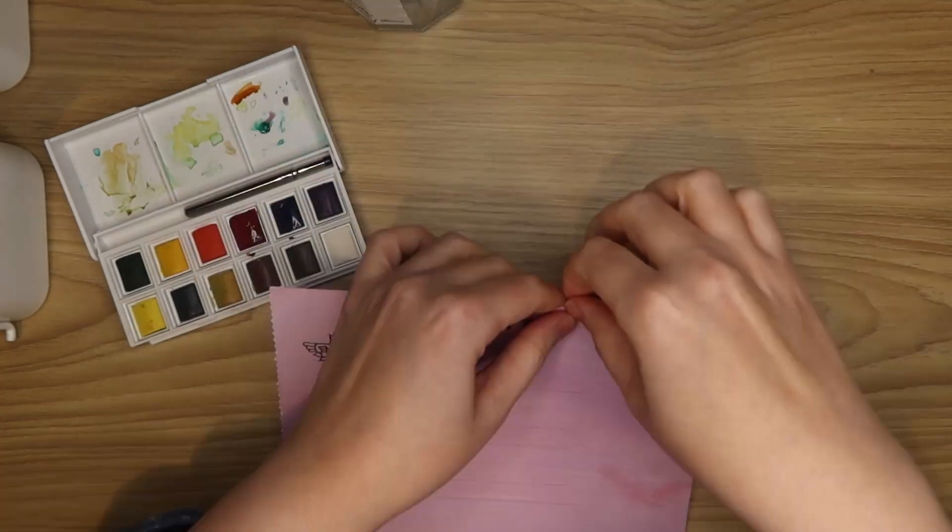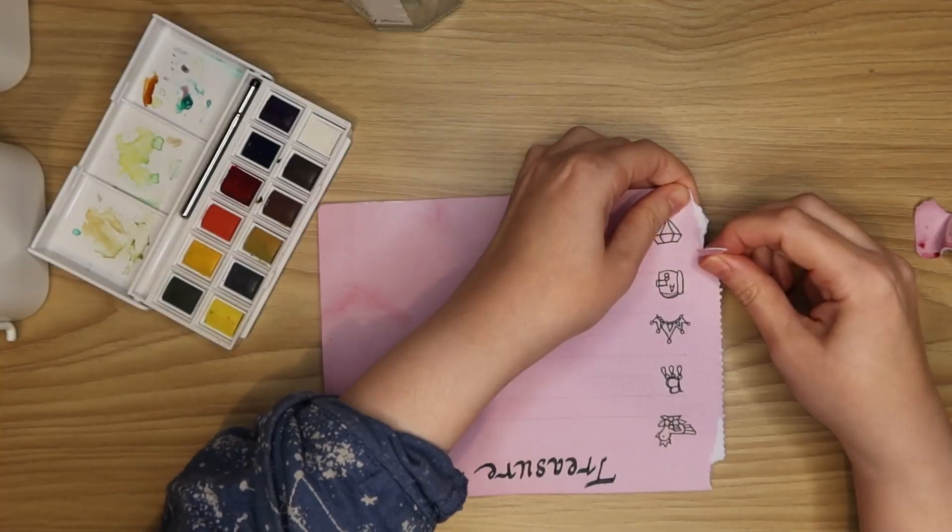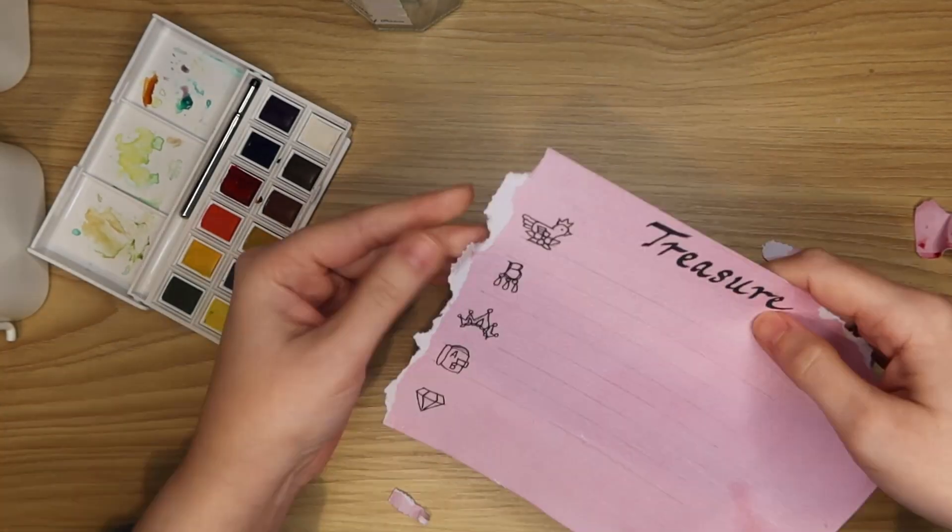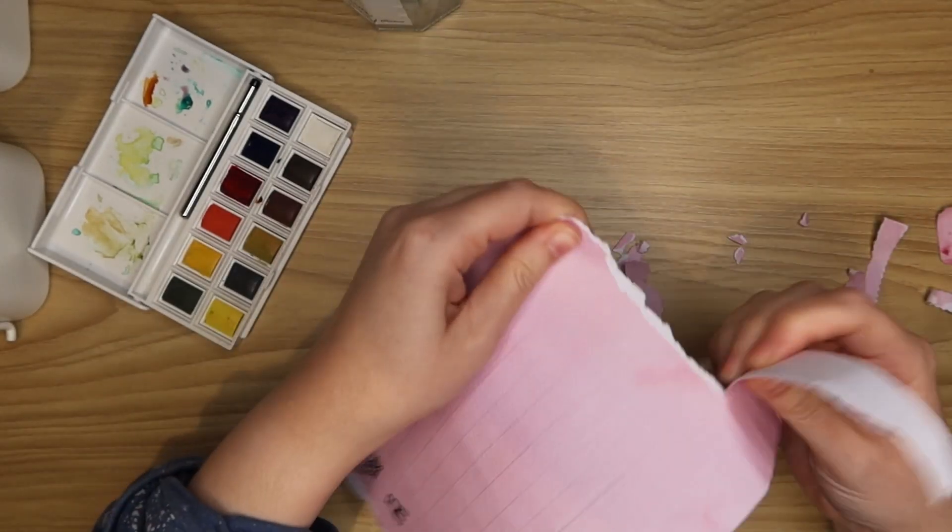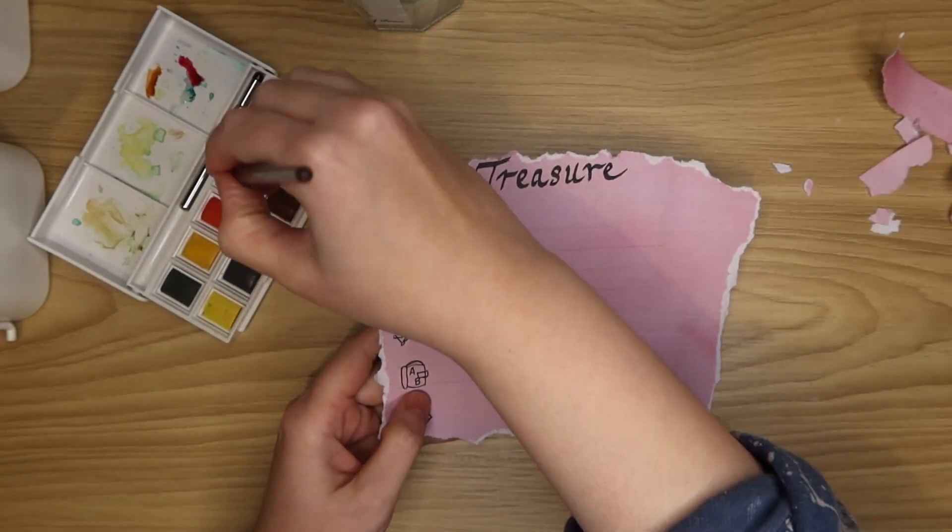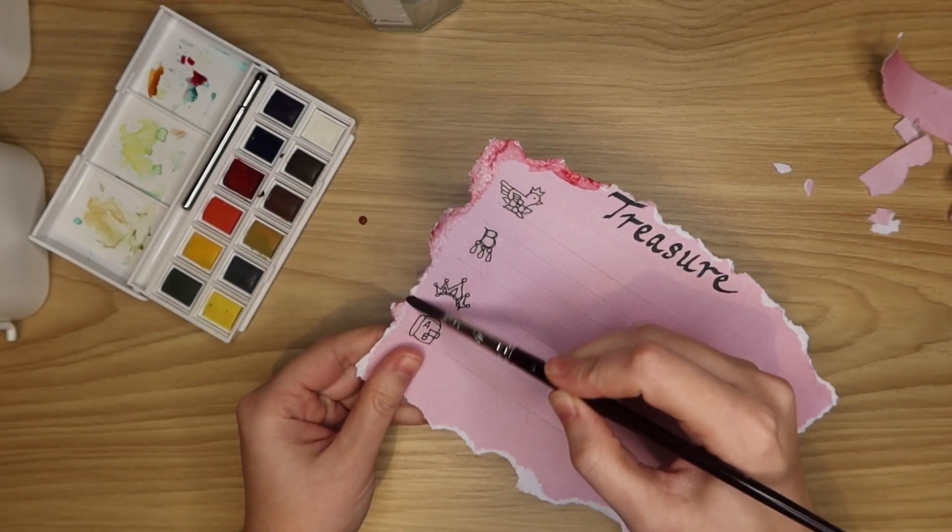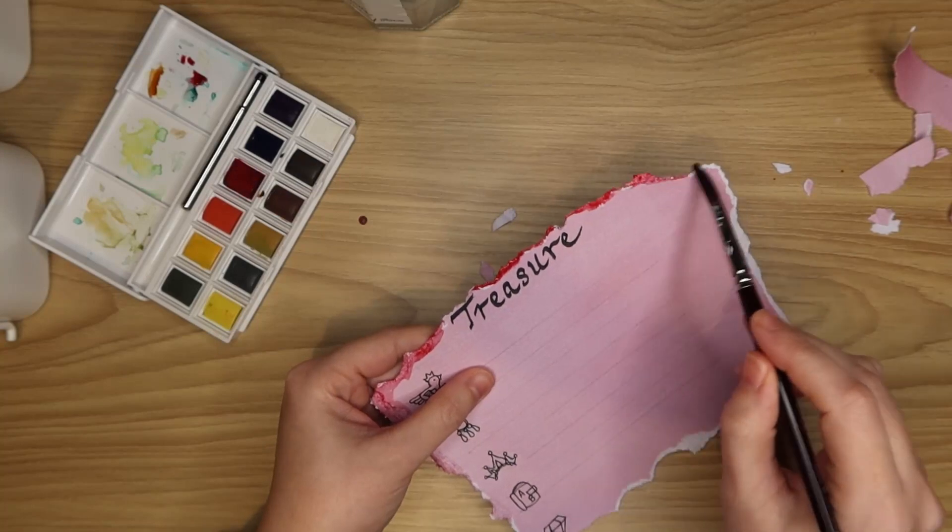As you can see my parchment has taken on a bit more of a pink appearance instead of brown but we're going to stick with it. Maybe it'll make for an interesting backstory. Anyway in case you hadn't guessed already this character is another queen who was married to Henry VIII and her name was Anne Boleyn.